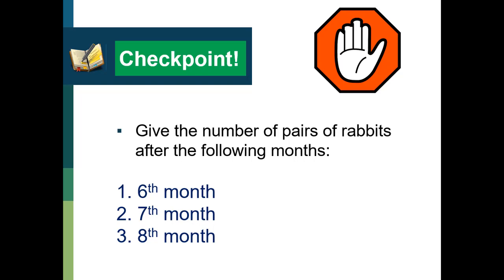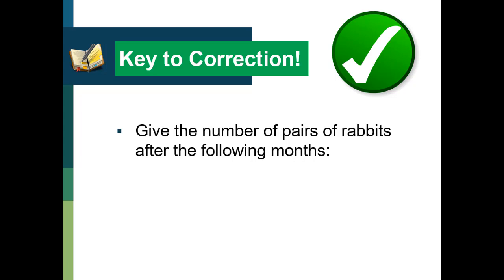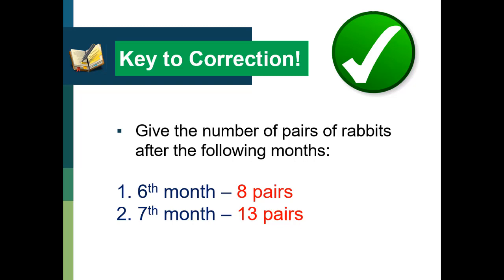I guess you have your answers now. Here is your key to correction. Since we have three and five pairs after the fourth and fifth months: after the sixth month, we'll have eight because three plus five is eight. For the seventh month, we'll have thirteen because five plus eight is thirteen. And after the eighth month, you'll have twenty-one because eight plus thirteen is twenty-one. That's how easy the Fibonacci sequence is, which originated from the famous rabbit problem.